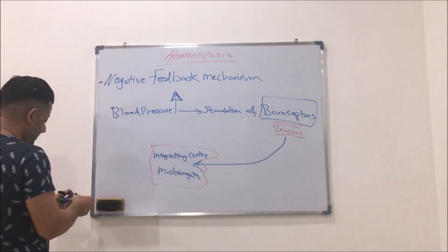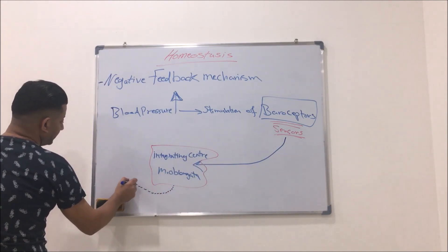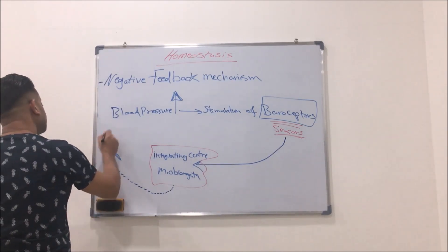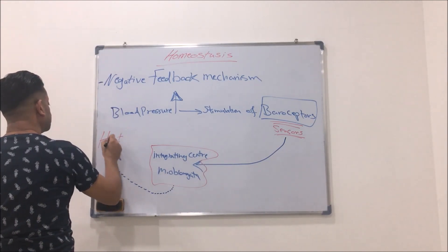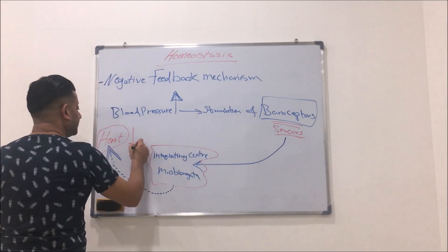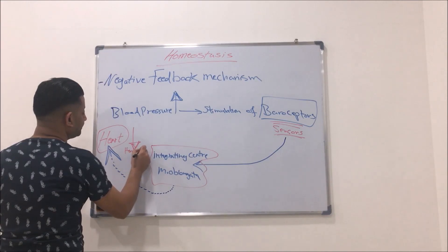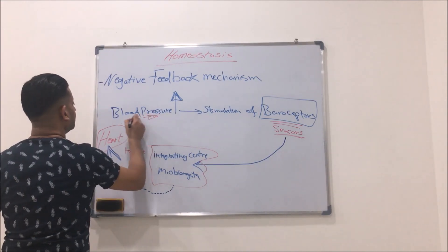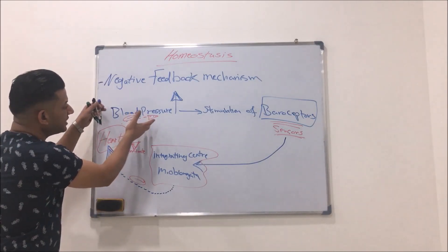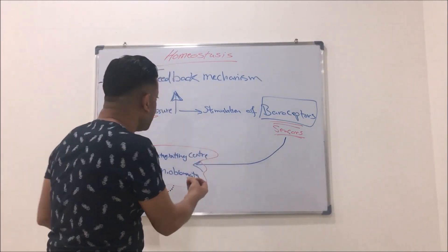The center here will send inhibitory signals to the heart to cause a decrease in heart rate. So when heart rate decreases, the blood pressure will also decrease. This is a good example of the negative feedback mechanism.